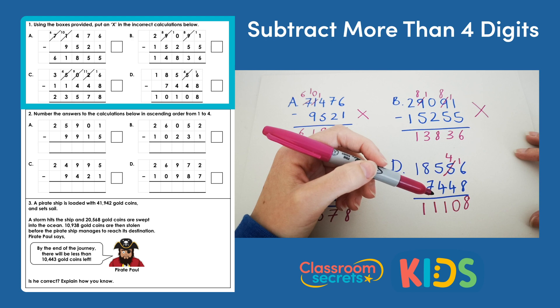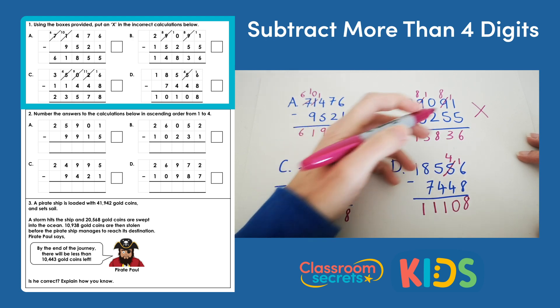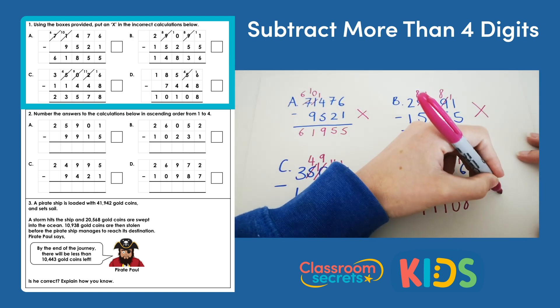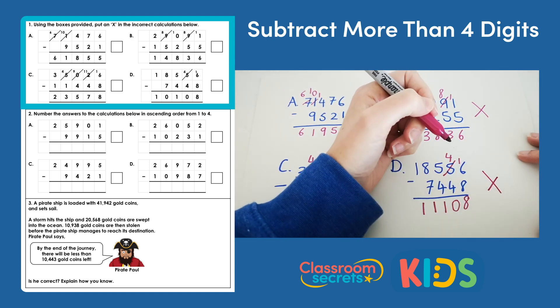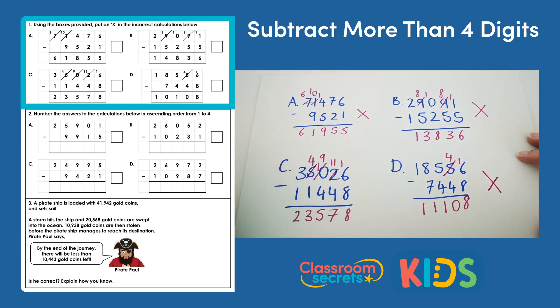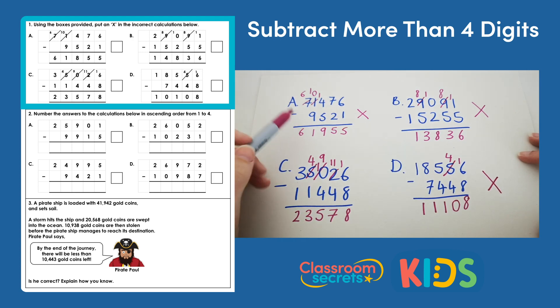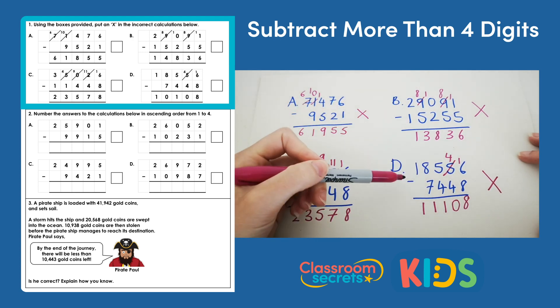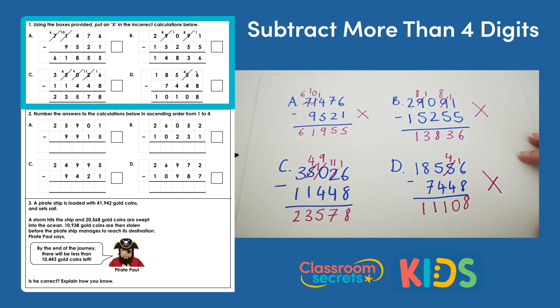However, on the sheet our answer is 10,108, so d is incorrect and needs a cross in the box. So a, b, and d are incorrect, and c is the correct answer.